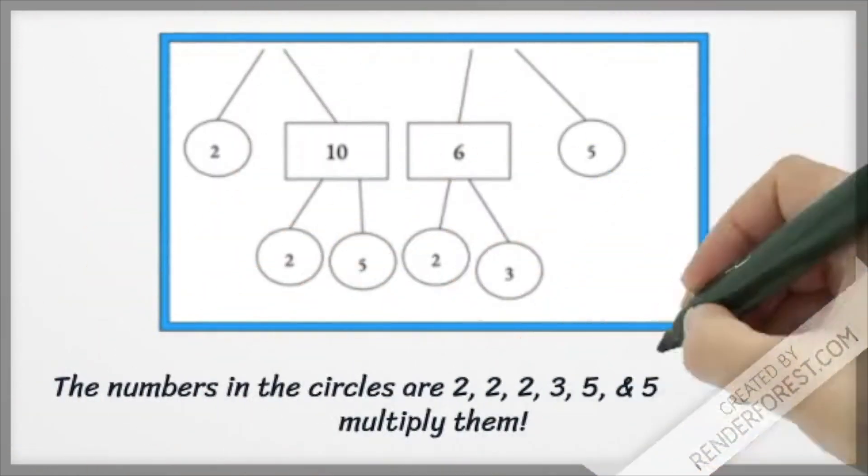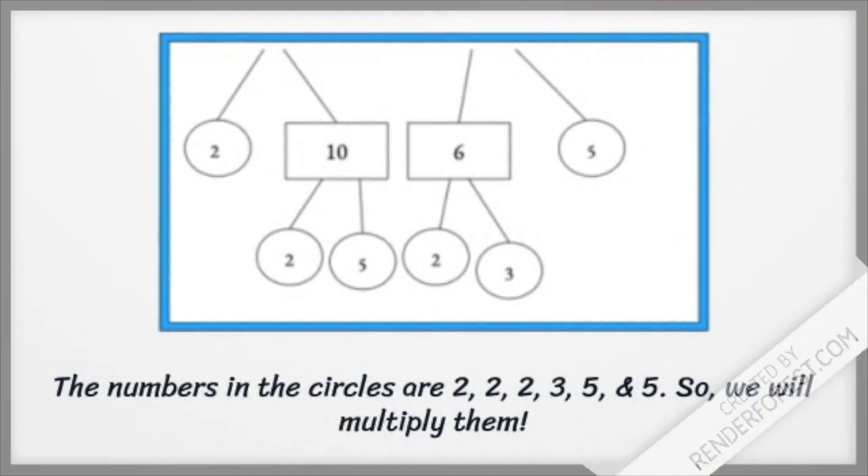The numbers in the circles are 2, 2, 2, 3, 5, and 5. So, we will multiply them.